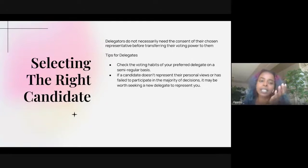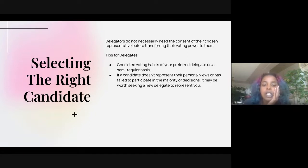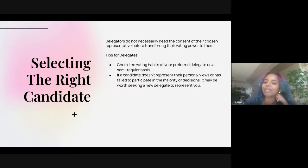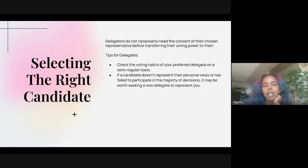Regarding selecting the right candidate: they ask delegators to check the voting habits of their preferred delegate on a semi-regular basis, and if a candidate doesn't represent their views or has failed to participate in the majority of decisions, it may be worth seeking a new delegate. The onus is also on the delegator to do their due diligence — which somewhat forces them to be more engaged in the governance process. But if you make the process too difficult, you might not get the number of delegates you're looking for, which may also explain the low applicant turnout on the forum.